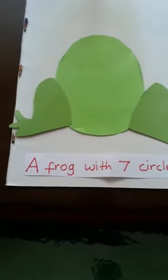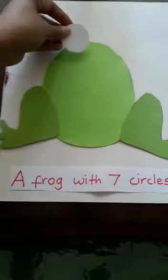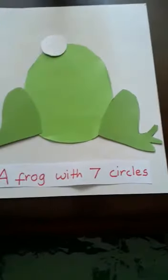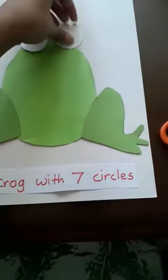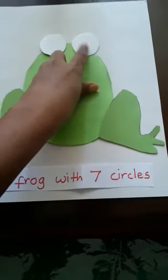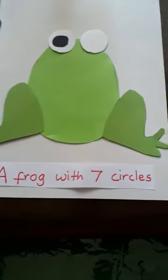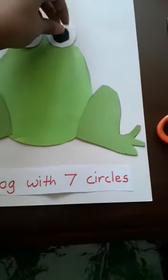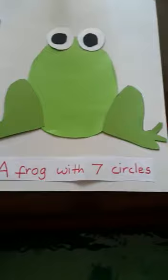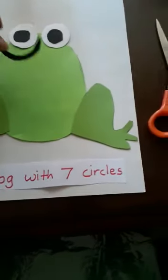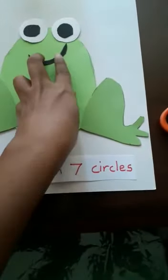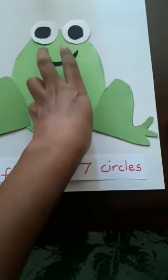Have your child stick the eyes right on top here. Then stick the black circles on the white circles, then stick them out right there.